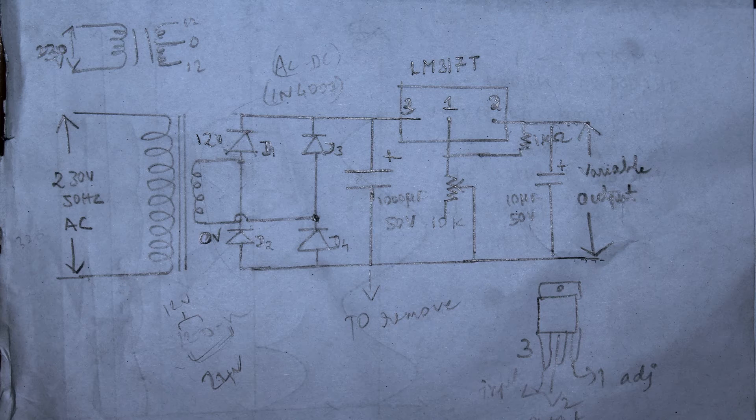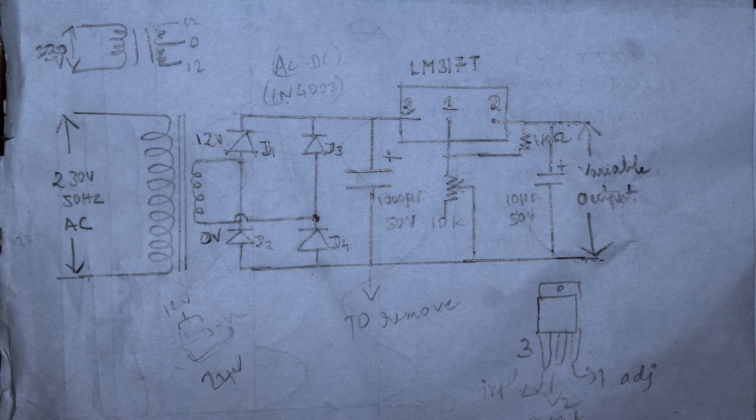It's normally a 10k pot which is used for adjusting the voltages, and this 1k is connected in parallel to pin 2 and pin 1. The remaining 10 microfarad, 50 volt capacitor is used for filtering purposes, as we've seen in the previous case.